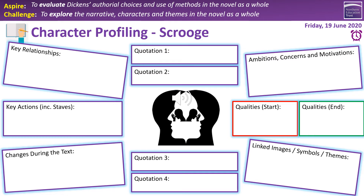We're going to move on from narrative to look at character now. We have previously looked at profiling Scrooge, but this is your chance to try and draw it all together into one place. We've got boxes on relationships, key actions including the staves in which those actions occur, how he changes during the course of the text, four quotation boxes, a box for ambitions, concerns and motivations, negative and positive qualities — or qualities at the start and end if easier — and a box for linked images, symbols and themes. You can refer to the previous ones if you have them handy, but do draw those things together. Don't forget that pretty much all these things are available in the recipe book, which you can find in the online learning section of the Academy website.